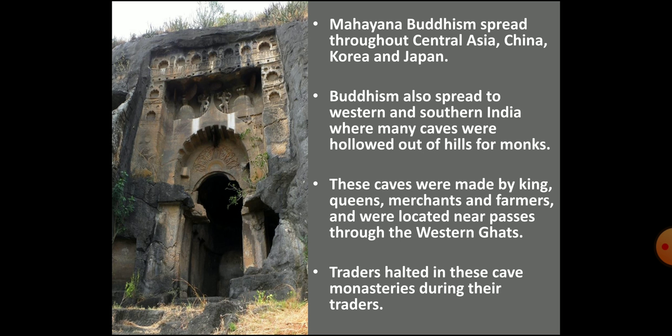Several caves were hollowed out of hills in Western and Southern India, where Buddhist monks lived. One such cave is shown here. These caves were mostly made on the orders of kings and queens. Even merchants and farmers also got caves made. These caves were generally located near passes through the Western Ghats. A pass is a low-level area in a mountain range. These passes were important as many roads ran through them, connecting the ports on the coast with cities in the Deccan. Thus, traders frequently passed through these areas and stayed in these caves during their journey.